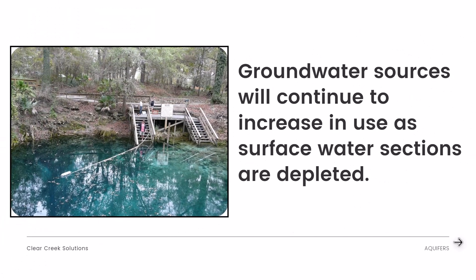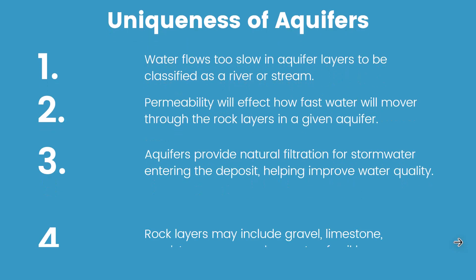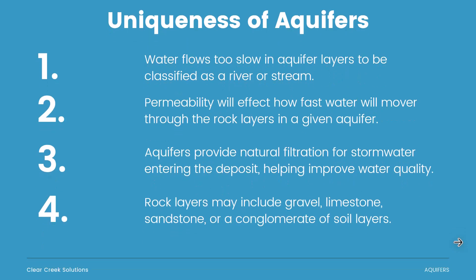Groundwater sources will continue to increase in use as surface water supplies are depleted. On a lot of the earth's surface, freshwater sections are being depleted over time, so we're going to have to utilize and harvest groundwater sources, because that's where a lot of the freshwater supply will be contained. Remember, most of the surface water we have is saltwater — undrinkable to humans and to most natural organisms. Permeability will affect how fast water moves through the rock layers in a given aquifer.